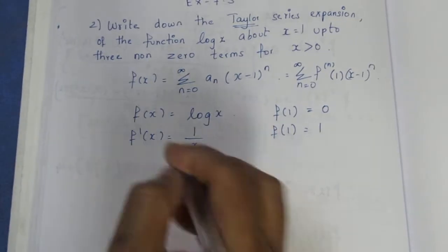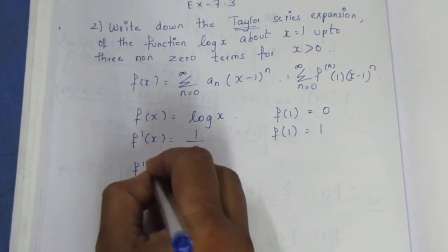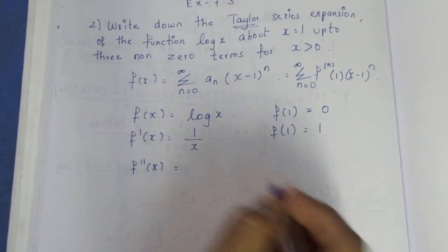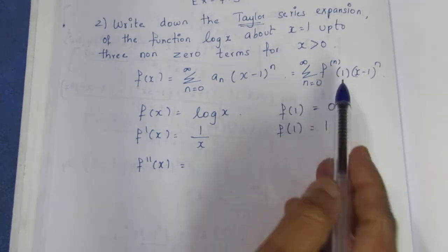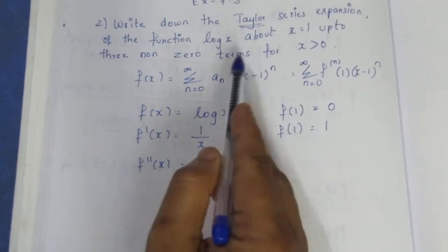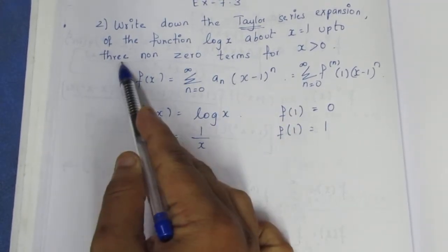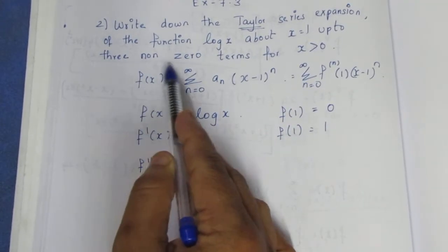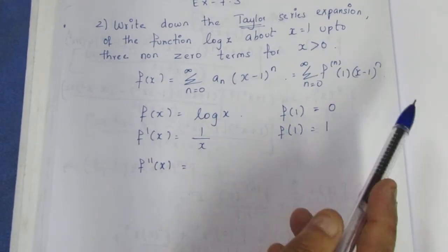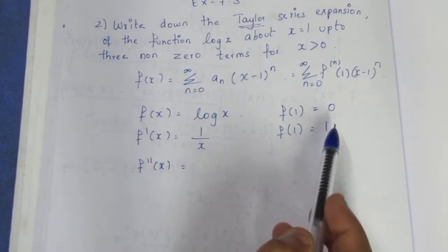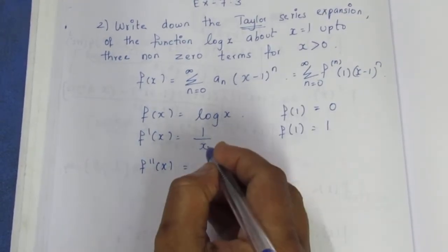Next, f double dash of x — the second derivative. We need three non-zero terms. The first term is zero, so we need to keep going. We differentiate 1 by x to find the second derivative.